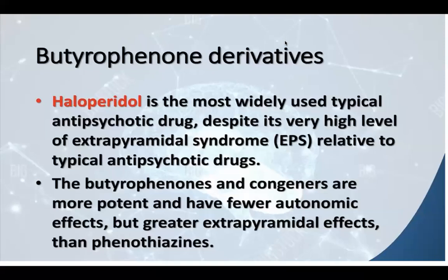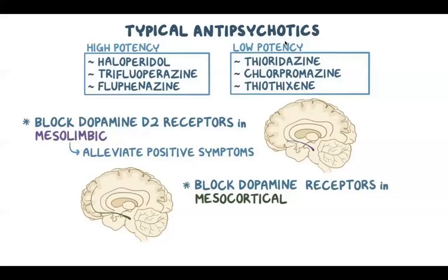Butyrophenone derivatives. This group, of which haloperidol is the most widely used, has a very different structure from the two preceding groups. Haloperidol butyrophenone is the most widely used typical antipsychotic drug, despite its high level of EPS relative to other typical antipsychotic drugs. Pimozide and molindone are typical antipsychotic drugs with no significant difference in EPS between these newer typical and other typical antipsychotic drugs.